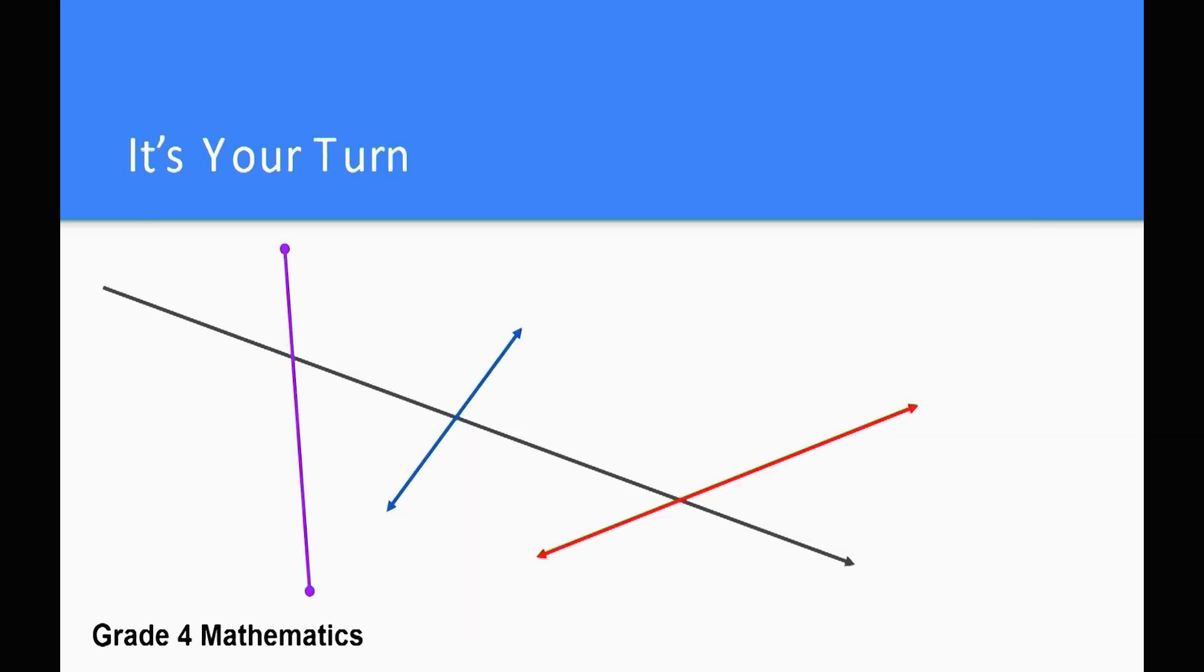Now it's your turn. Use your colored pencils or markers, and a ruler if you have one, to draw your own picture with lines, line segments, rays, and angles. Put some points on your lines and name them with capital letters. Can you use mathematical symbols to name some lines, rays, and line segments? You can continue to work on this after the video.